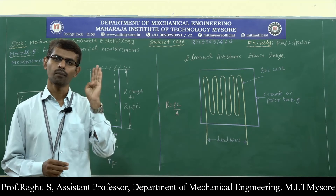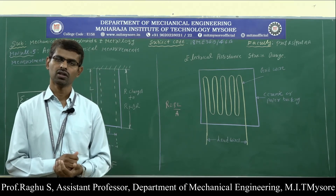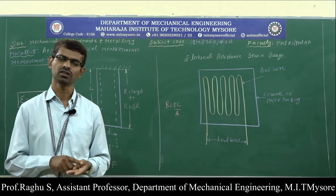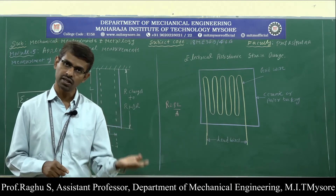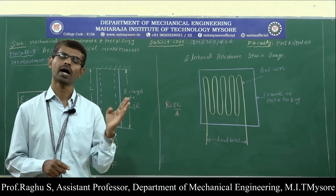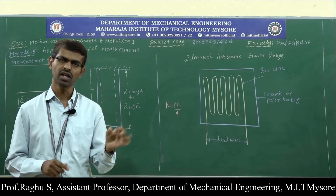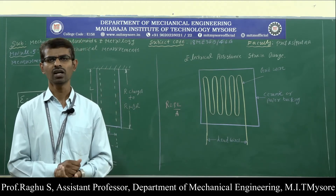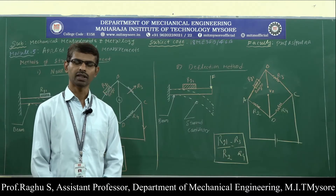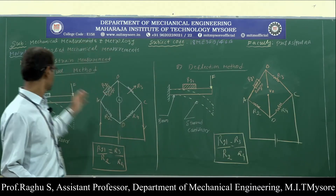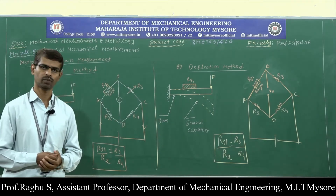To summarize, strain gauges are classified as mechanical strain gauge and electrical strain gauges. In case of electrical strain gauges, we have resistance type, inductance type, and capacitance type. In the resistance type, we have three subtypes: unbonded strain gauge, bonded strain gauge, and semiconductor strain gauge. Now we will discuss the methods of measurement of strain — the null method and the deflection method.